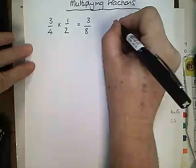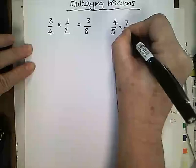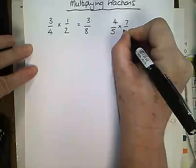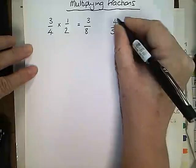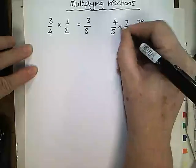Let me do another example. So if I have 4 fifths and I times it by 7 eighths, 4 times 7 is 28 over 5 times 8 is 40.